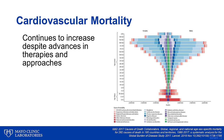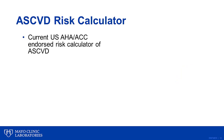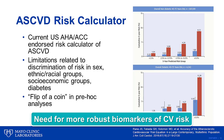Cardiovascular mortality continues to increase despite advances in therapies and novel approaches. The ASCVD, or atherosclerotic risk calculator, is the only current American Heart Association and American College of Cardiology calculator endorsed by the guidelines for assessment of atherosclerosis. However, this calculator has limitations related to discrimination of risk in sex, different ethnic or racial groups, socioeconomic groups, and diabetes. Some experts consider the ASCVD calculator as a simple flip of a coin, emphasizing the need for more robust biomarkers of cardiovascular risk.